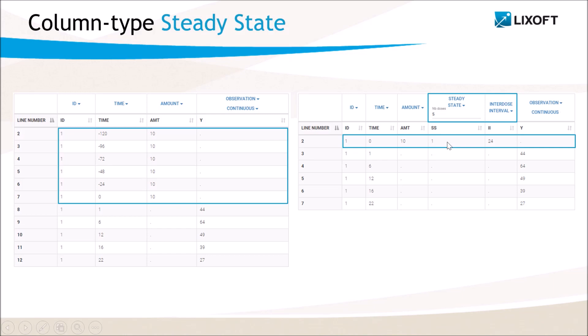By default, the number is 5, so there are six doses in total, but it can be changed in the interface. The period between doses is set to the interdose interval, here 24 hours.